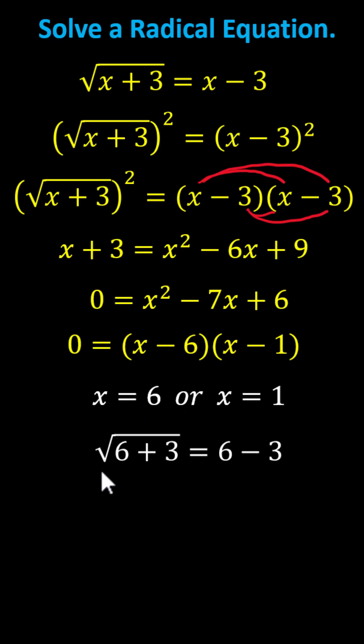When x equals 6, we have the square root of 9 equals 3, which is correct. When x equals 1, we have the square root of 4 equals negative 2, which is not correct. The square root of 4 equals positive 2, indicating we only have one solution. The solution is x equals 6. I hope you found this helpful.